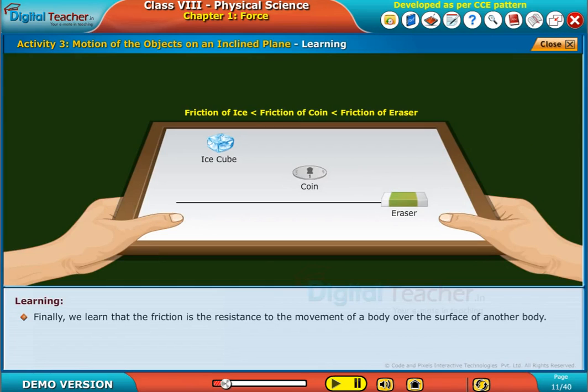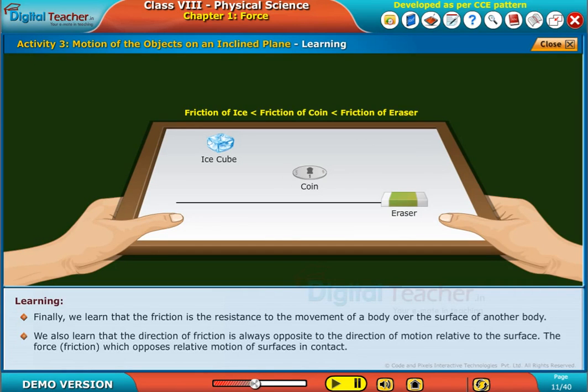Finally, we learn that friction is the resistance to the movement of a body over the surface of another body. We also learn that the direction of friction is always opposite to the direction of motion relative to the surface. The force of friction opposes relative motion of surfaces in contact.